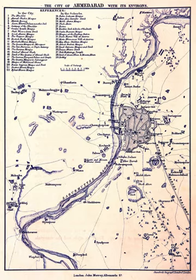1875 – Railway bridge and Ellis Bridge were damaged by heavy floods. 1881 – B.J. Medical College started near Jijabai. 1888 – Calico Mills was started by Sheth Karamchand Premchand. 1890 – The Tsar of Russia came to Ahmedabad. 1897 – Opening ceremony of Gujarat College by Lord Sandhurst; telephone service was started. 1898 – Death of Sheth Ranchhordlal Chhotalal.